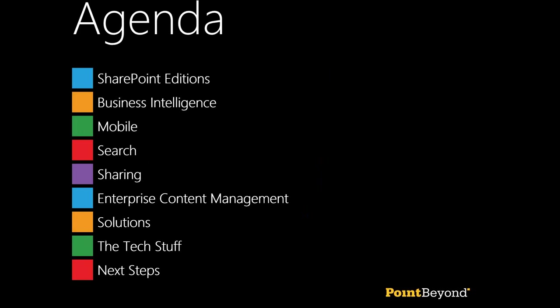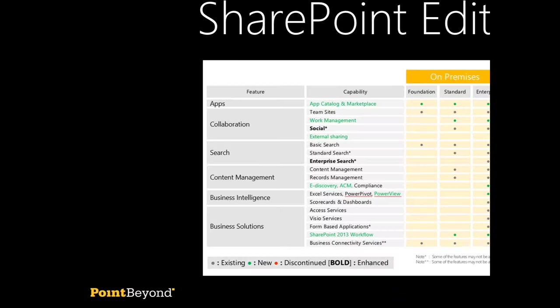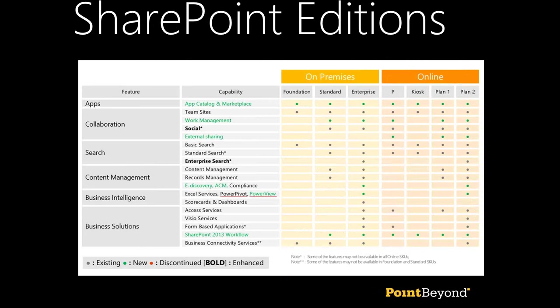So, those of you familiar with SharePoint 2010 will recall three basic versions: Foundation, Standard, and Enterprise — and that still applies to SharePoint 2013. We also have the online versions, with a big push from Microsoft with SharePoint Online being part of Office 365. One of the changes between 2010 and 2013 is that the online offerings have become much more closely aligned to the on-premise capability.